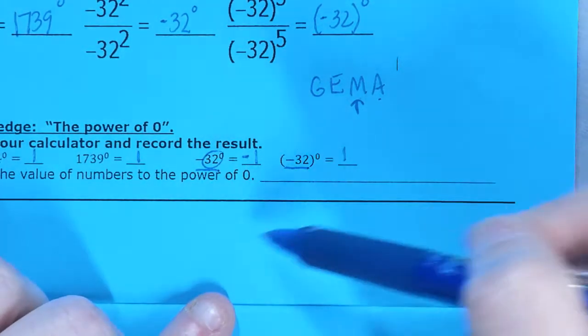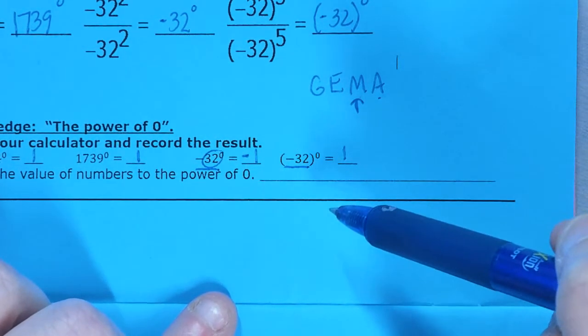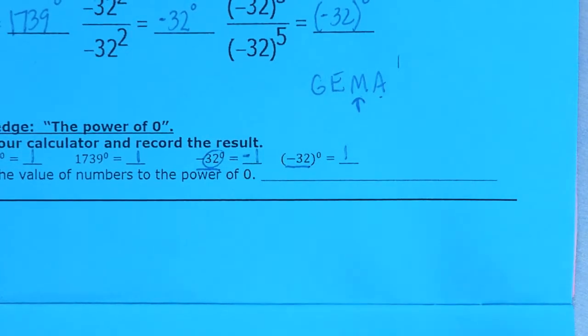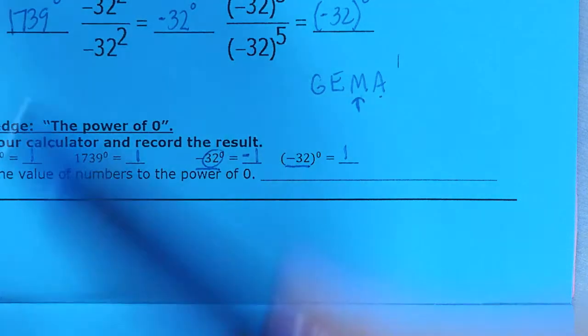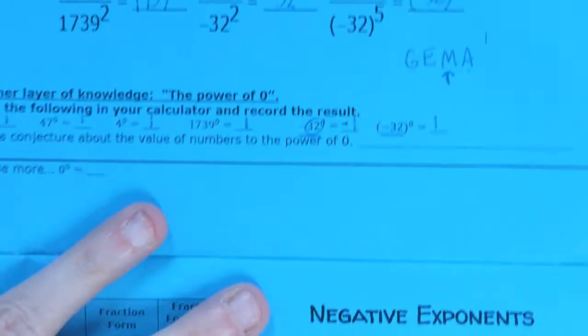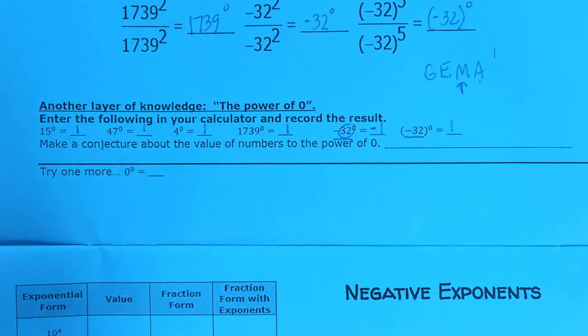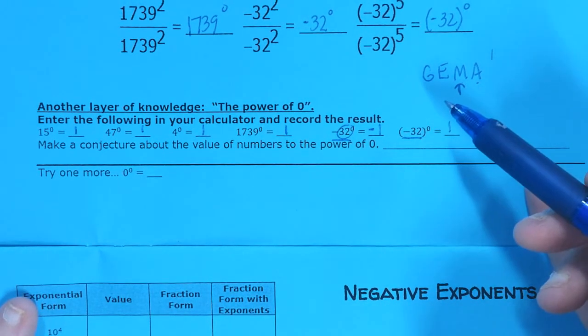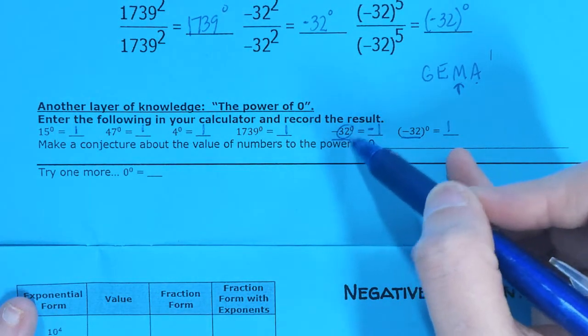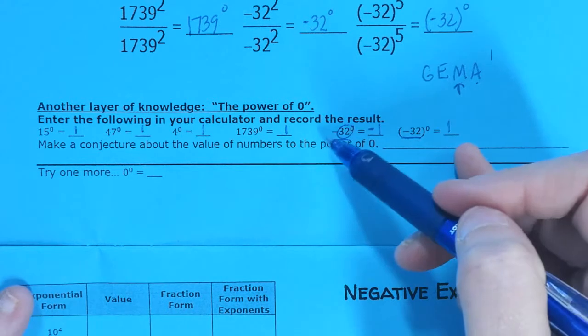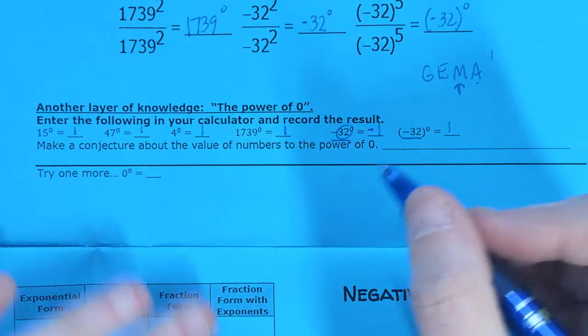The reason I show you this is because order matters, parentheses matter. Some of you guys saw this when we were doing quadratic formula last unit, that if you weren't careful, you would get no solution even when there was a solution, because you weren't putting parentheses around a negative. So hopefully the conjecture you're able to make, conjecture being like an assumption, is that anything I raise to the 0 power gives me a value of 1.